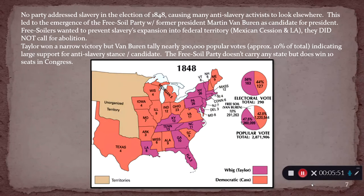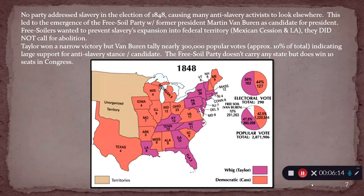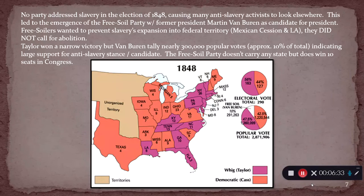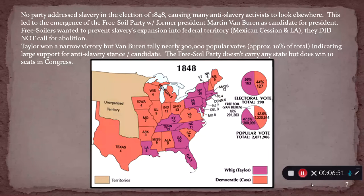Zachary Taylor, the Whig candidate, wins all the purple-colored states on the map. Taylor is from Louisiana, he's a slave owner, and he wins slave states like Kentucky, Georgia, North Carolina, Florida, Maryland, and Delaware — but also New York, Pennsylvania, Vermont, Massachusetts, and Connecticut. Taylor is clearly not saying he wants slavery to be permanent and to expand, because he would not have won those mid-Atlantic and New England states if he had.